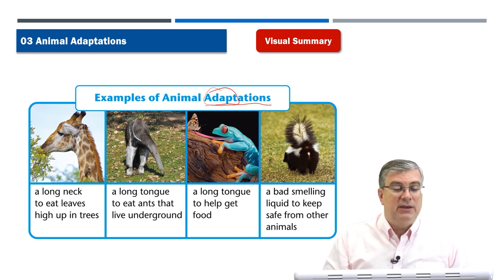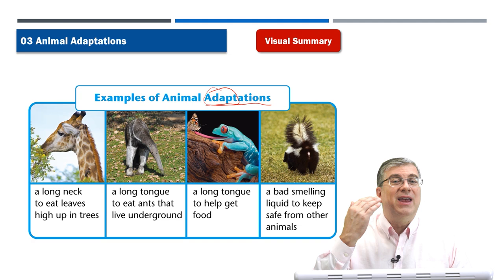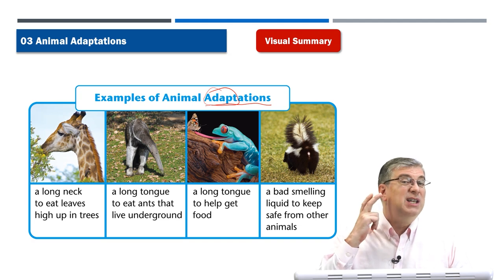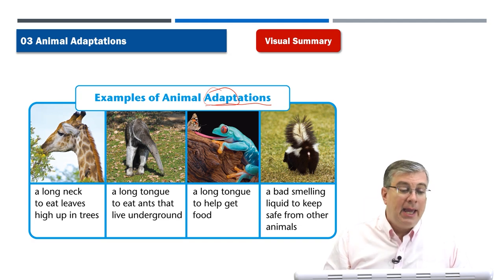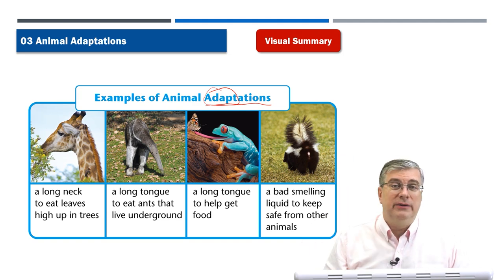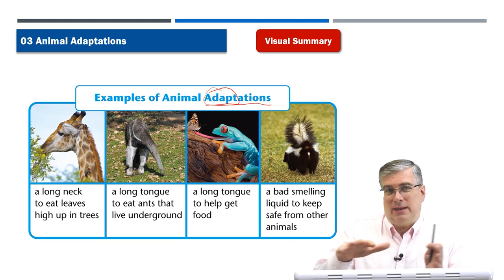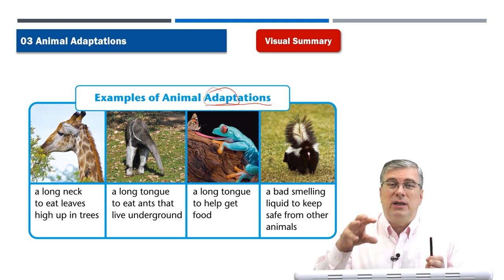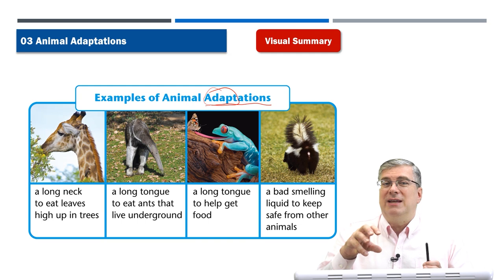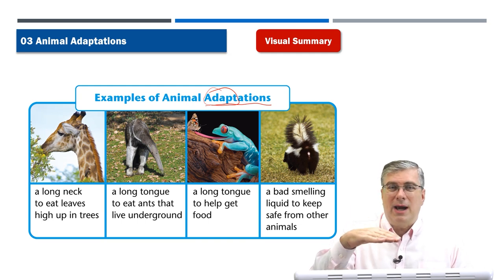Let's look at the first animal — that is a giraffe. A giraffe is famous for its really long neck. Why does it have a long neck? Because it can eat the leaves high up in the trees. Usually, many animals that eat plants are eating the grass and leaves that are low to the ground.